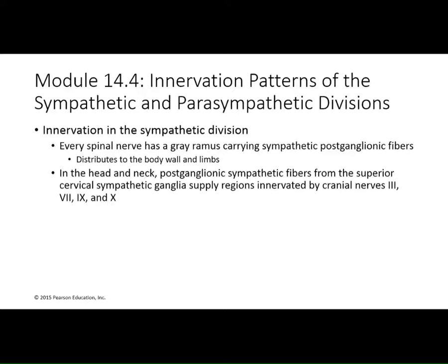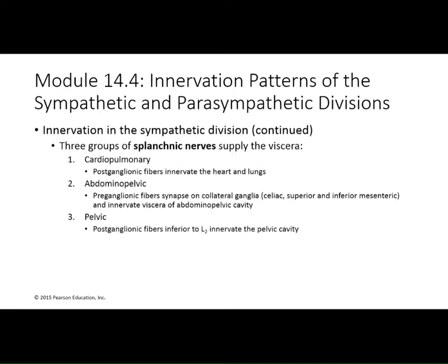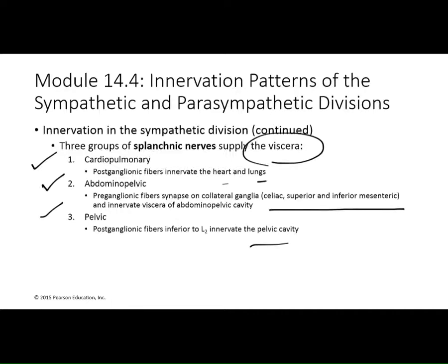In the head and neck, post-ganglionic sympathetic fibers come from the superior cervical sympathetic ganglia, innervated by cranial nerves 3, 7, 9, and 10. There are also three groups of splanchnic nerves feeding your internal organs — your viscera. There's a cardiopulmonary group going to the heart and lungs, an abdominopelvic group going to all regions of the abdominal pelvic cavity, and a pelvic group going down to the lower structures in the lumbar and sacral regions.